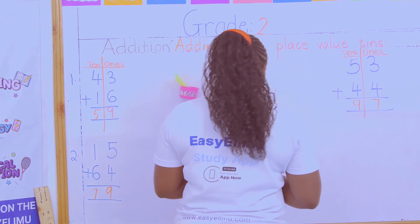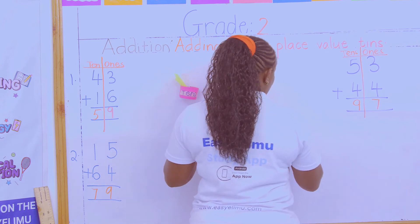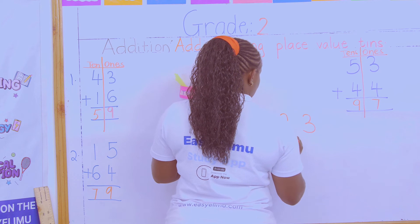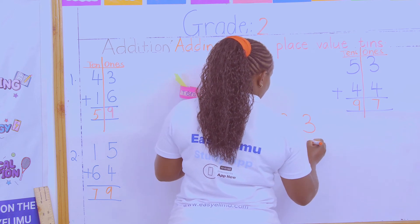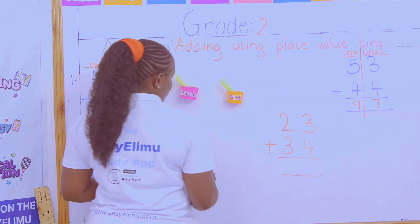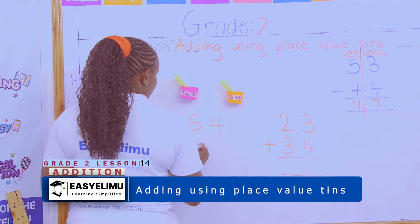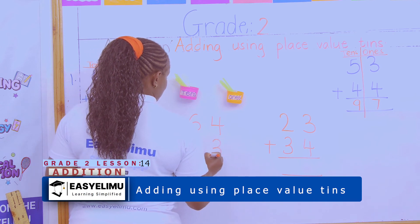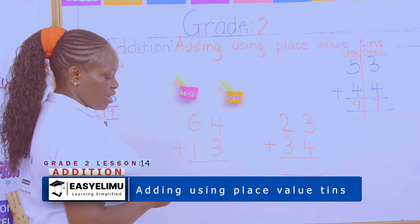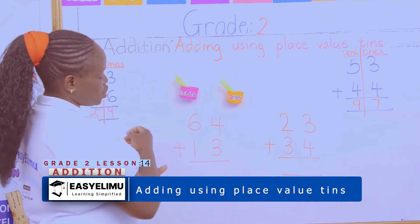So my answer is ninety-seven. For your homework today, do: twenty-three plus thirty-four, and sixty-four plus thirteen. Make sure you draw the place value teens to show how you got your answers.